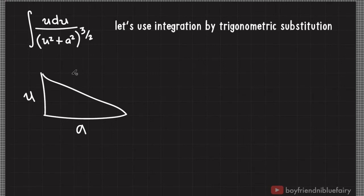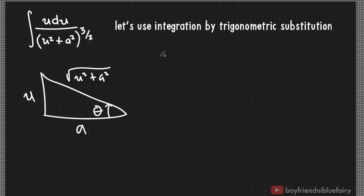Apparently, the hypotenuse is equal to square root of u squared plus a squared, as dictated by the Pythagorean theorem. Now, based on the figure, if this triangle has an angle theta here,